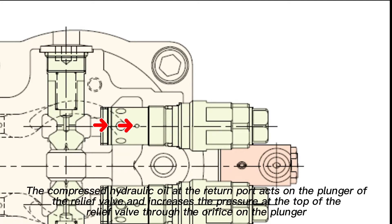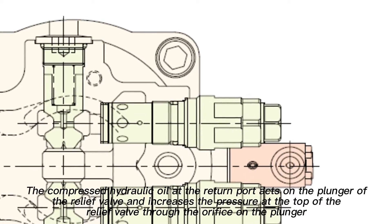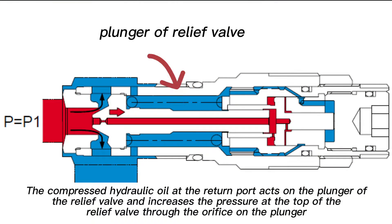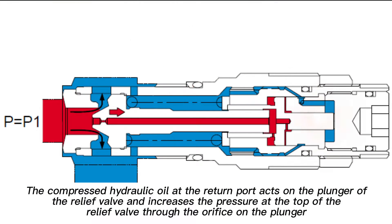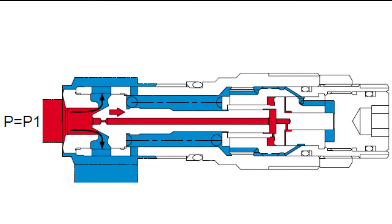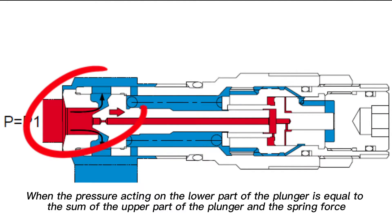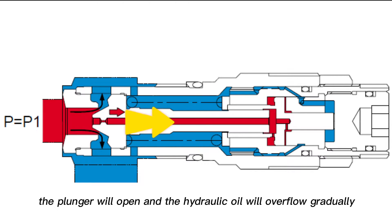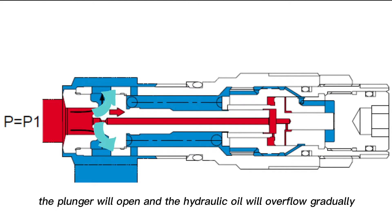The compressed hydraulic oil at the return port acts on the plunger of the relief valve and increases the pressure at the top of the relief valve through the orifice on the plunger. When the pressure acting on the lower part of the plunger is equal to the sum of the upper part of the plunger and the spring force, the plunger will open and the hydraulic oil will overflow gradually.